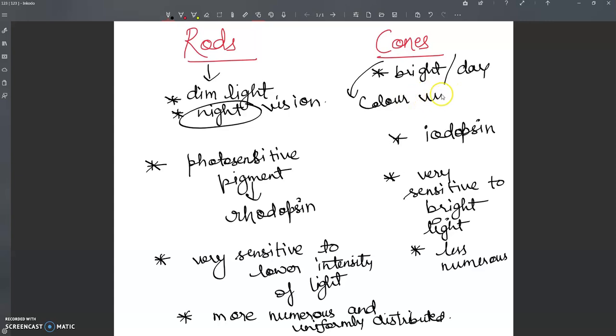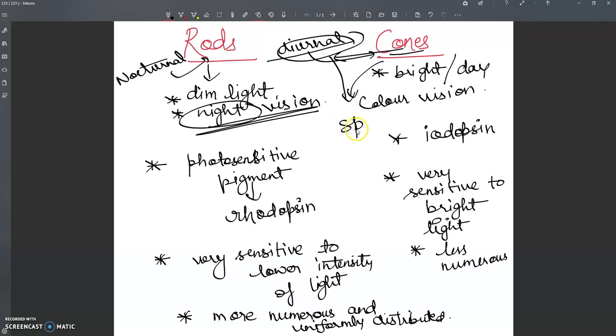Cones are densely packed in the fovea. Like a sparrow, which are active during daytime, diurnal animals which are active during daytime mainly use cone cells. You can get an exam question: which cells do nocturnal animals use for vision? You should remember the rods, because they are responsible for dim light, which is night vision. Diurnal animals, like sparrows, mainly use cones.